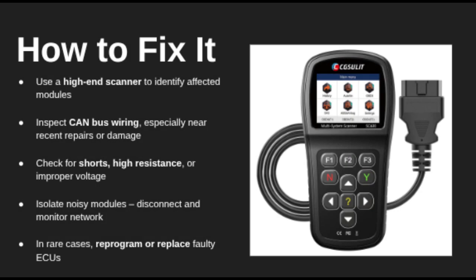To fix U0002, use a professional diagnostic scanner that can communicate with all modules and log CAN traffic. Check the wiring and connectors between major control units, especially near the fuse box, ECU, and firewall grommets. Look for high resistance, shorts, or signal noise. If needed, start isolating modules by disconnecting one at a time to see which one may be corrupting the CAN line.